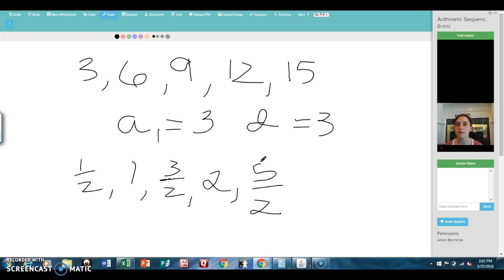This is another arithmetic sequence where the first term, in this case A1, is 1/2, and the common difference D is 1/2. I'm adding 1/2 each time.